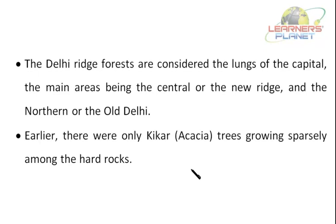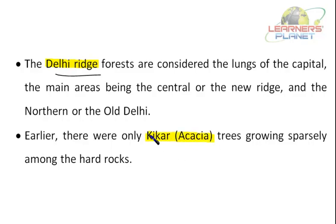The Delhi Ridge forests are considered the lungs of the capital, the main areas being the central or new ridge and the northern or old Delhi. Earlier there were only Kikkar, popularly called Acacia, growing sparsely among the hard rocks. But according to municipal records, after 1857, the British ordered the planting of thousands of neem and babool trees. By the time India attained independence, this area was covered with diverse vegetation of plants and trees.